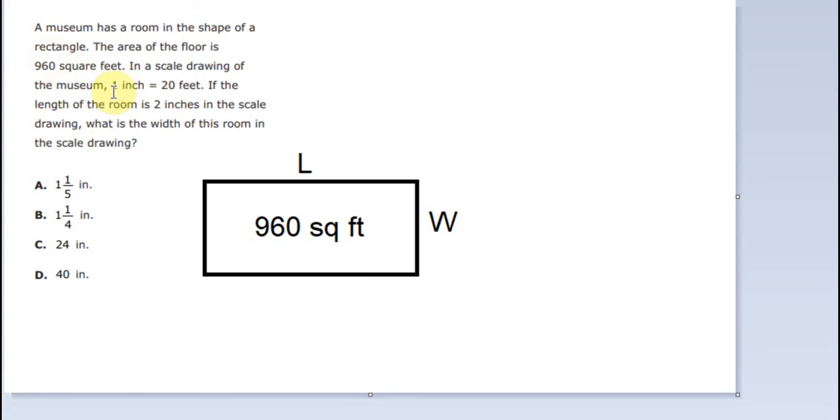We know that 1 inch is equal to 20 feet. Now we will convert this one into square inches. That's why we have the formula: 960 divided by 20 to the power of 2.